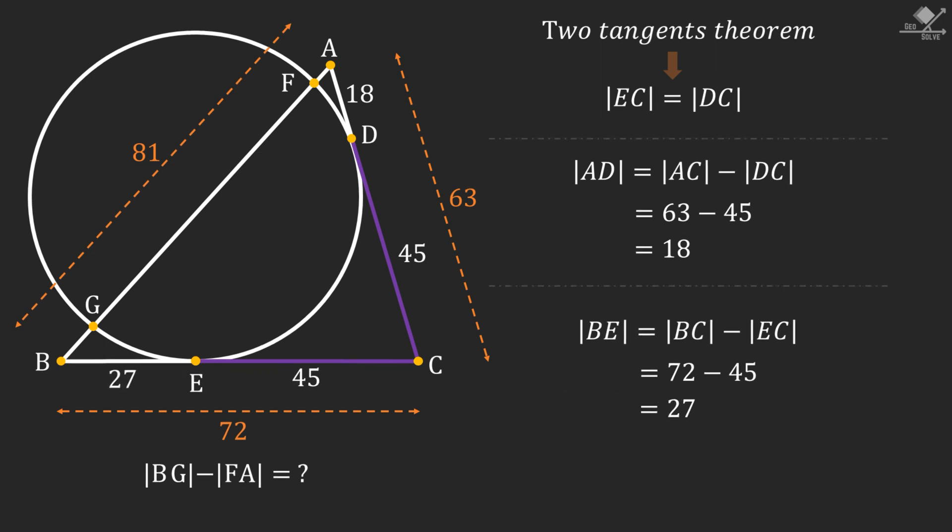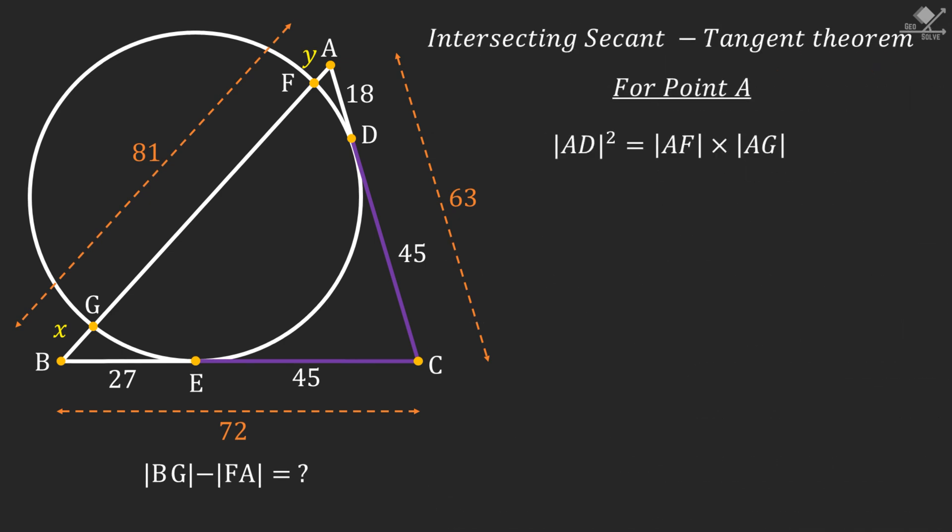Now let's call the length of the line segment BG as X and FA as Y. From here we can use intersecting secant theorem for points A and B. For point A we will have AD squared equals AF times AG. When we put the values in, we will have 18 squared equals Y times 81 minus X. Taking the square and distributing Y, we will have 324 equals 81Y minus XY, and let's call this equation number one.